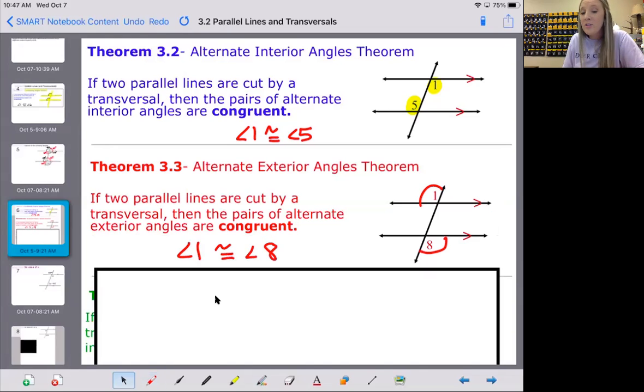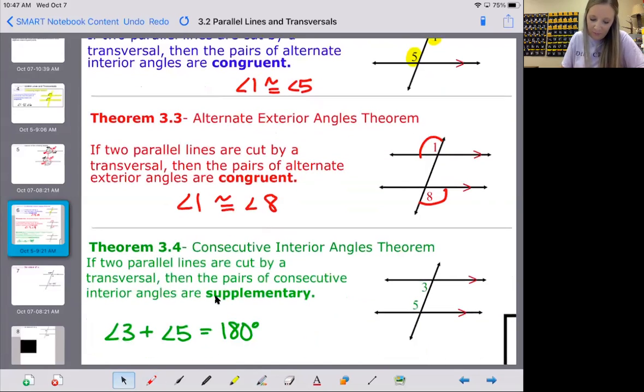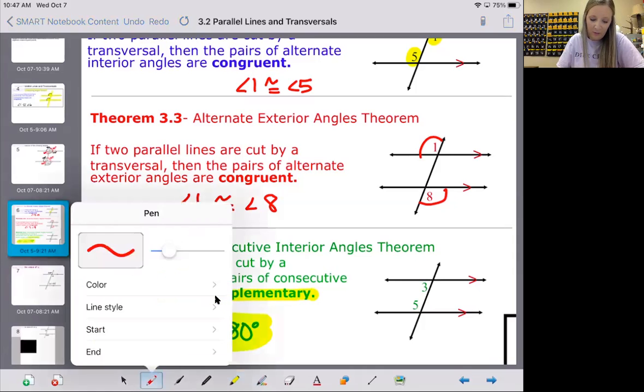This last one, I'll just tell you now, is the one everyone messes up. This is the hardest one because it's the one that's different. This one says consecutive interior angles are supplementary, meaning they equal 180. In your notes, make sure that you highlight this word supplementary because this is the only pair of angles that are supplementary from this list of theorems.